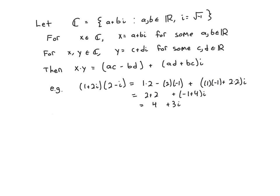So for example if x is one plus two i and y is two minus i, the first part is one times two, the last part is two times negative one, because this last coefficient is actually negative one.